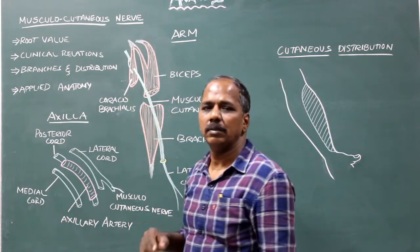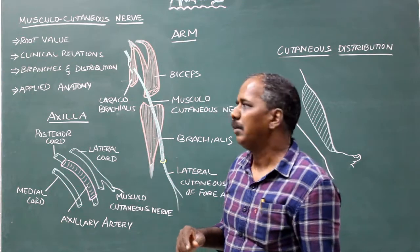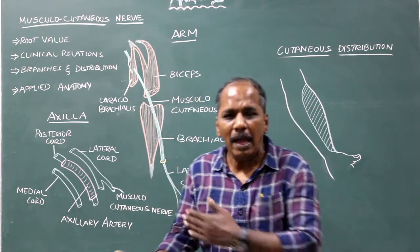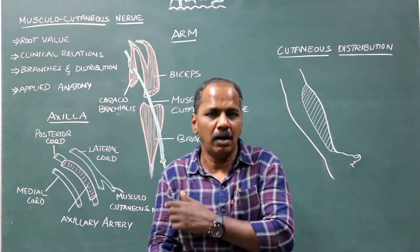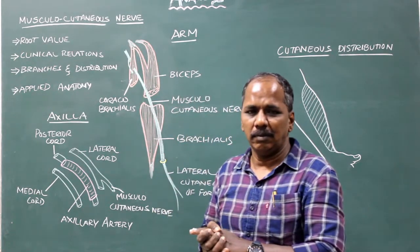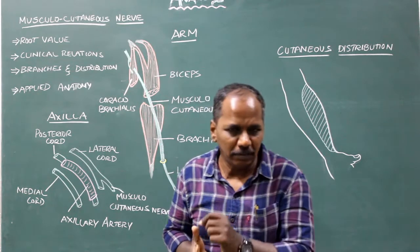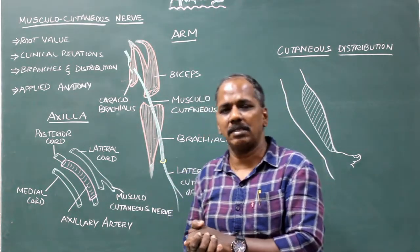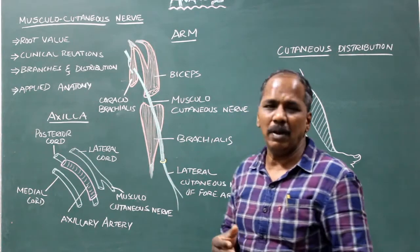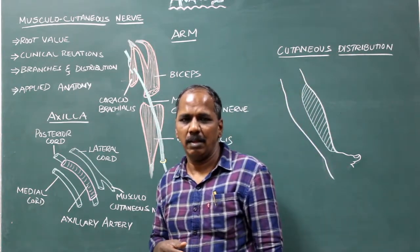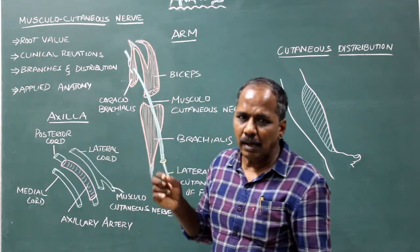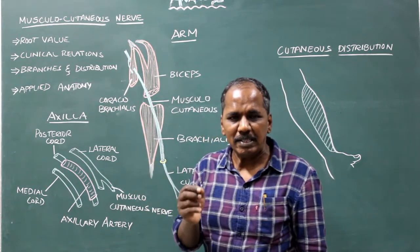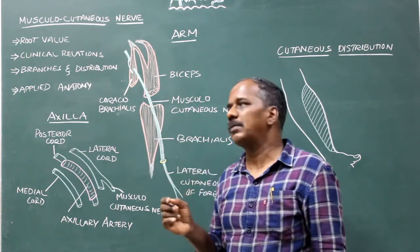Musculocutaneous nerve. It is the chief nerve of the anterior compartment of the arm. It is the nerve of the lateral cord of the brachial plexus. Root value: anterior primary rami of C5, C6, and C7 spinal nerves.